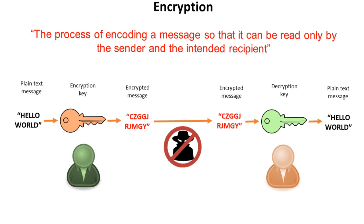At a very simple level, the sender of information would apply some kind of encryption to a plaintext message. This message can then be released over some communication medium like a local network or the internet. Anyone who intercepts this message in transit will just read it as garbage. At the other end, the recipient receives the encrypted message and requires some form of decryption key in order to translate the message back into the original format.